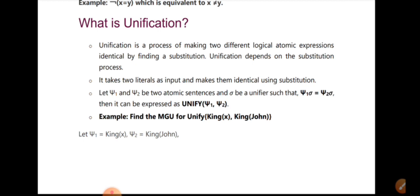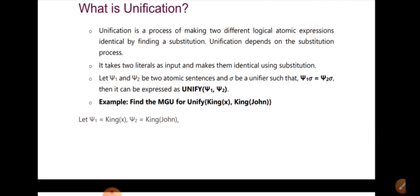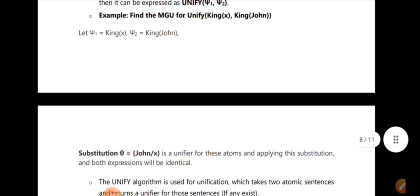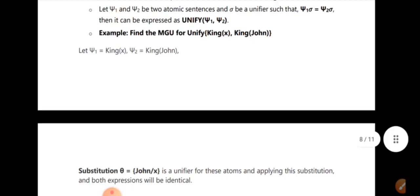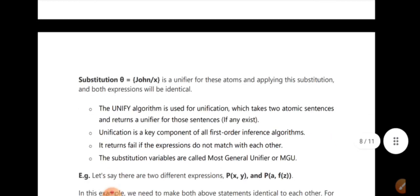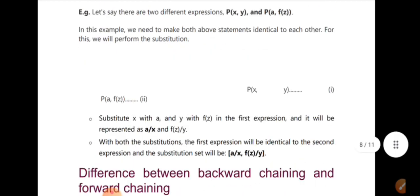Now let's do an example. Find the MGU to unify king(X) and king(John). We have two atomic sentences: king(X) and king(John). We need to substitute X with John. We assign the variable X the value John. In this way, the two expressions become identical through substitution.